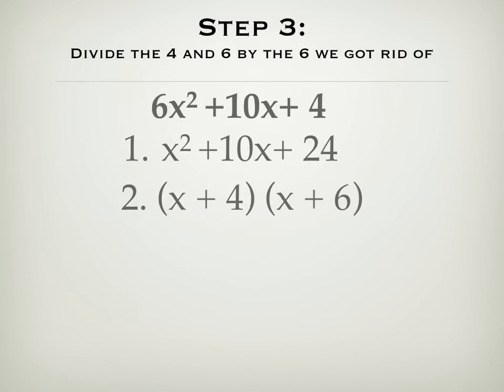Then, we can divide 4 and 6 by that 6 we got rid of earlier. So, we'll get x plus 4 over 6 times x plus 6 over 6.